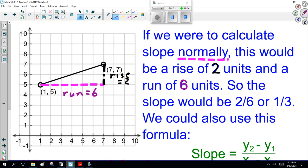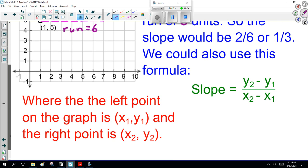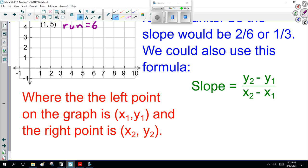So the slope would be 2 over 6, or 1 over 3, or 0.333333 depending on what the calculator tells us. But we could always use the formula.